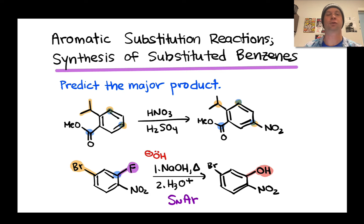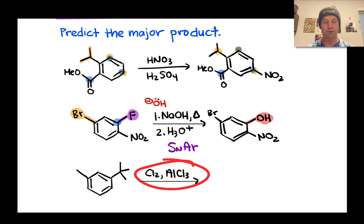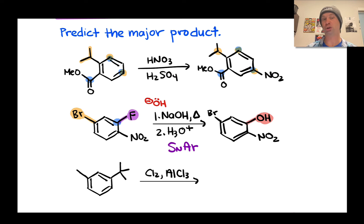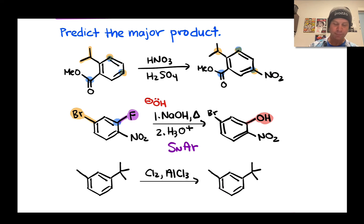The third case returns to electrophilic aromatic substitution: Cl₂ with Lewis acid AlCl₃ generates a chlorine electrophile, so we're chlorinating the aromatic ring. The alkyl groups already attached remain in place. We think through directing effects — a tert-butyl group directs ortho and para to itself, and a methyl group also directs ortho and para to itself.